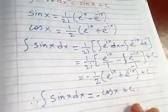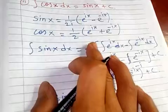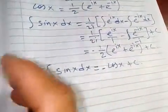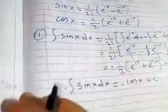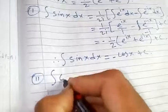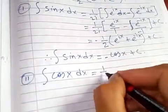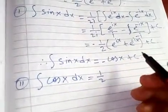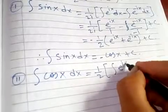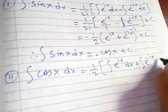Now similarly for cosine integration. ∫cos(x)dx - I'm going to do a shortcut. This equals 1/2 times the integral of e^(ix)dx plus the integral of e^(-ix)dx.